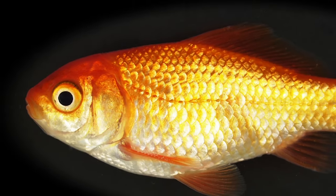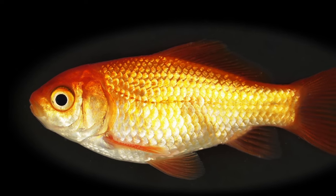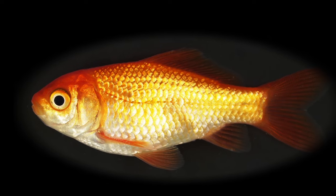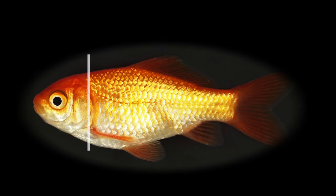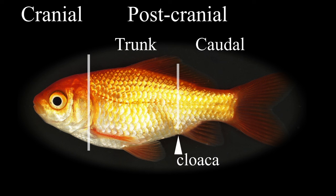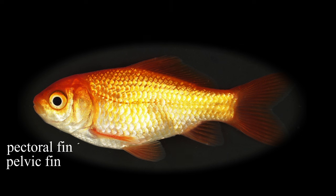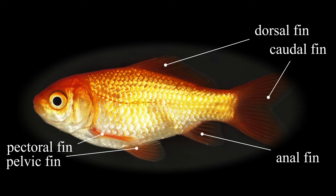Now we will look at the morphologies. Based on comparative vertebrate anatomy textbooks, the body parts of wild type goldfish can be divided into two levels: cranial and post-cranial. The post-cranial level is further divided into the trunk and caudal levels, based on the location of the cloaca. At the post-cranial level, there are two sets of paired fins — pectoral and pelvic fins — and three median fins including the dorsal, anal, and caudal fins.